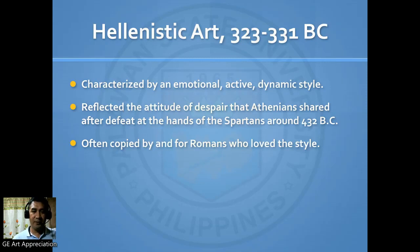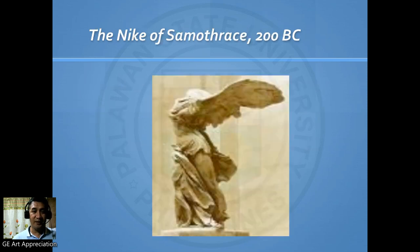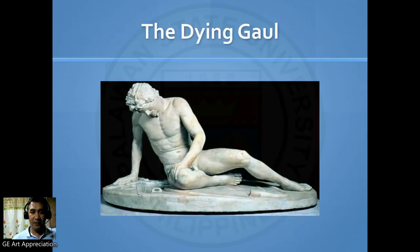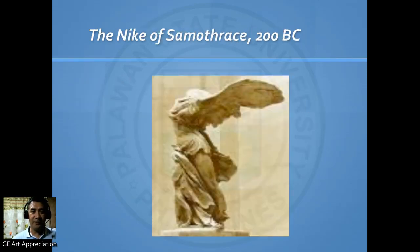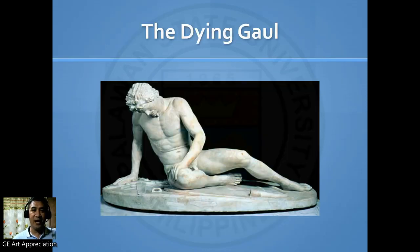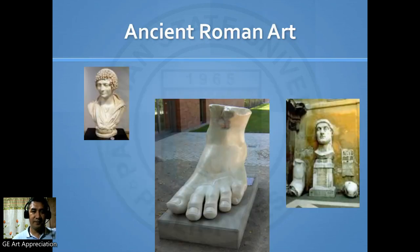During this time, they were defeated by the Spartans. So you can see most of their art — in the statue figures — reflects a sort of desperation. Here we have the Nike of Samothrace, 200 BC, and the Dying Gaul. These are examples of Hellenistic art moving into ancient Roman art.